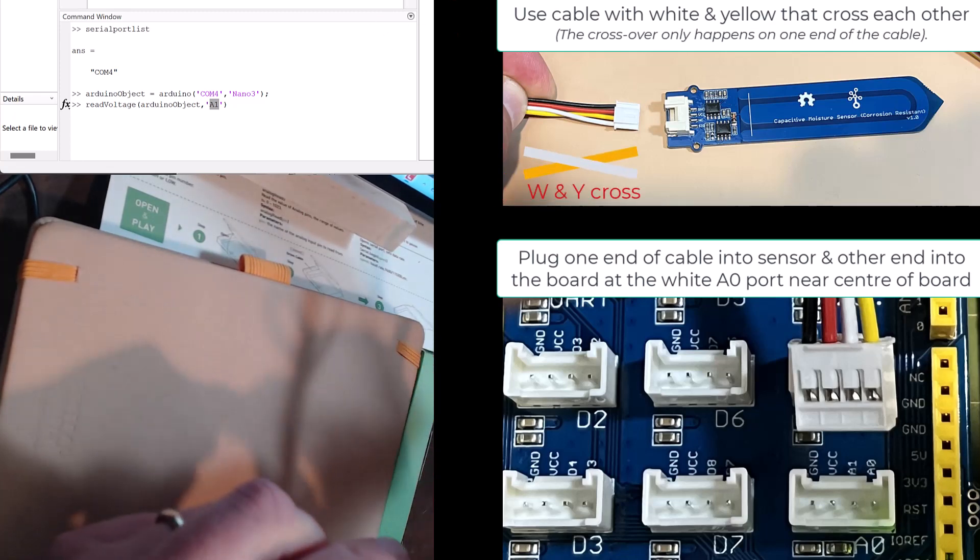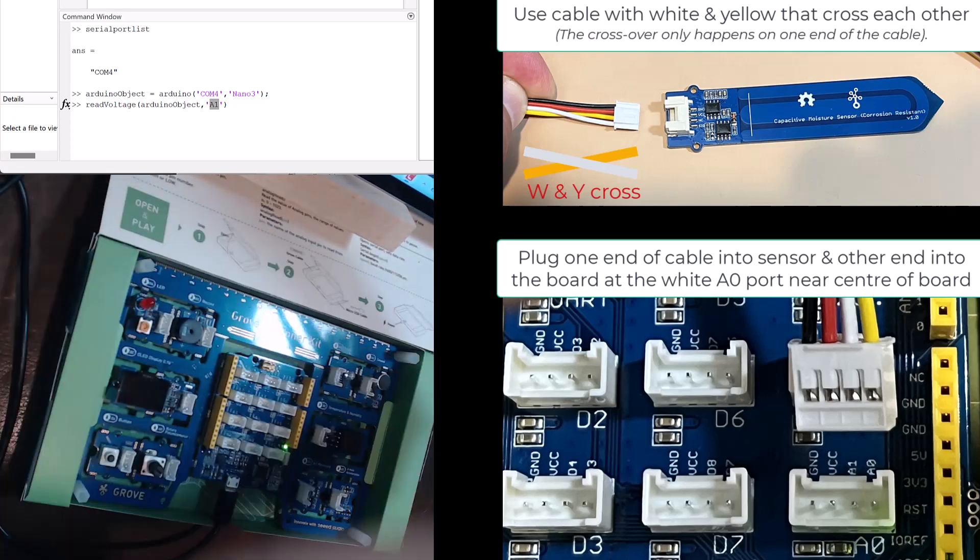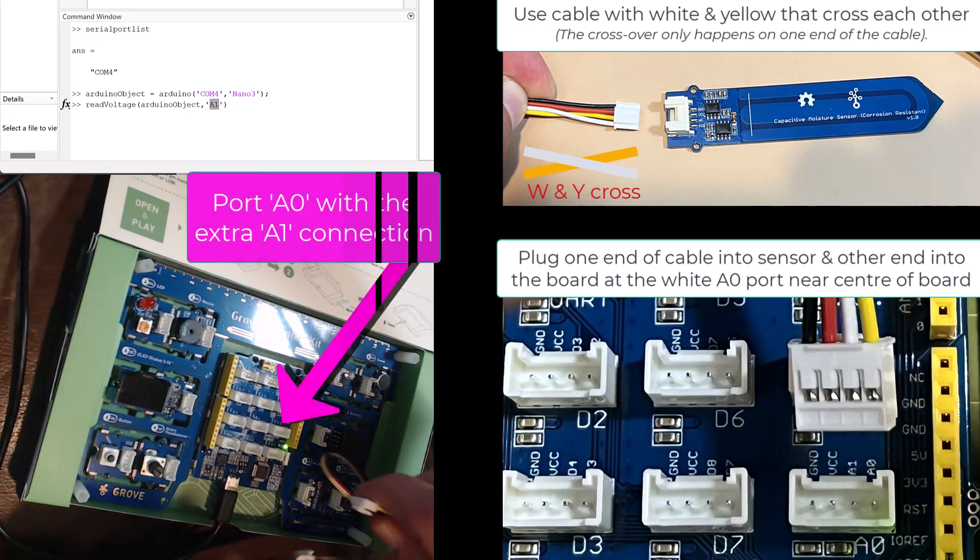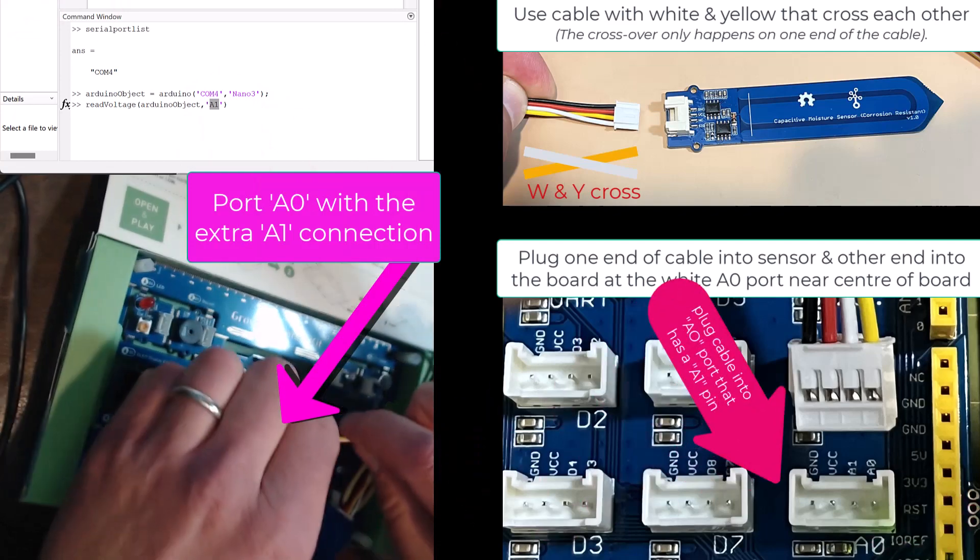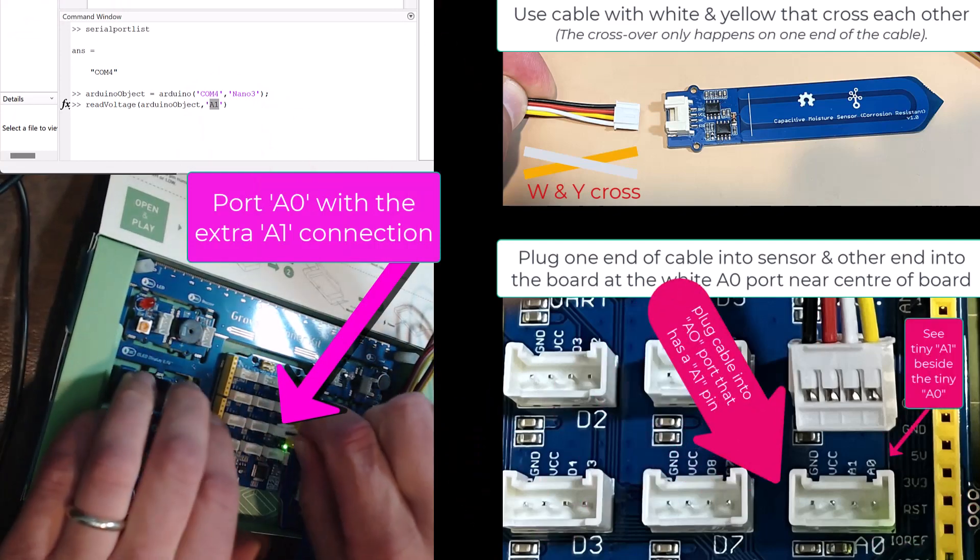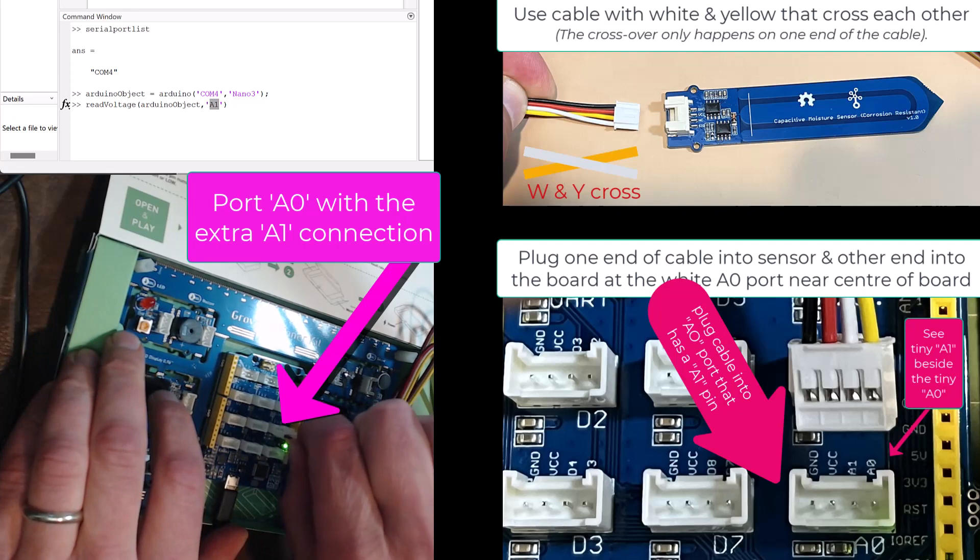We're going to connect there and connect into the A0 port which allows us to also use A1 which is also connected. That's why we swap the lines.